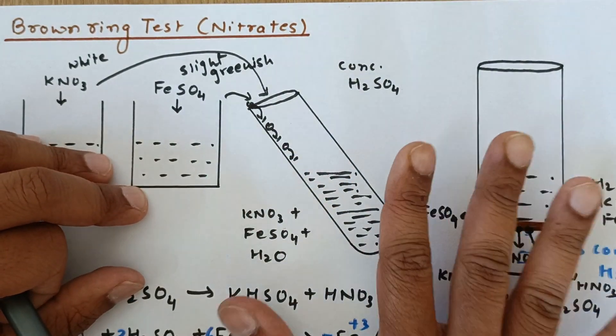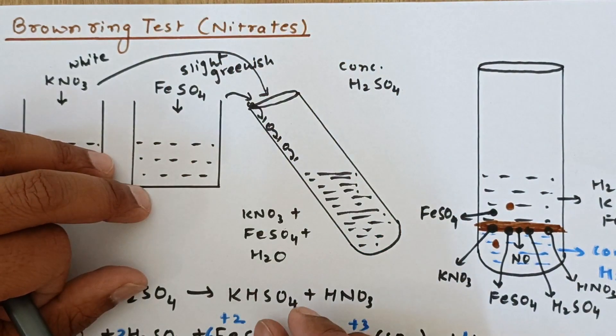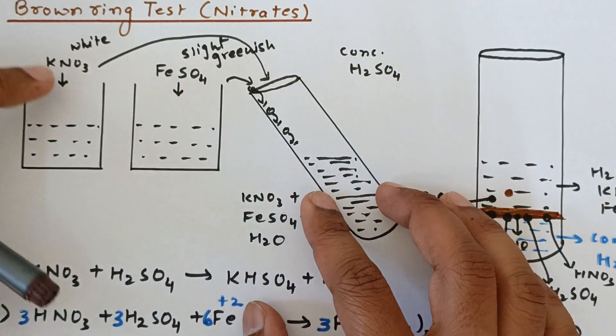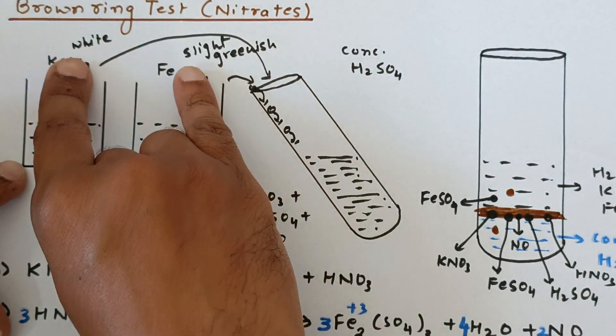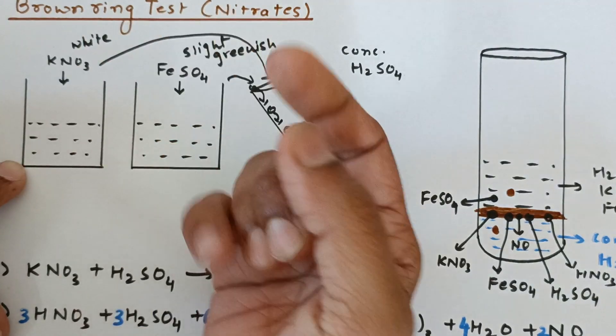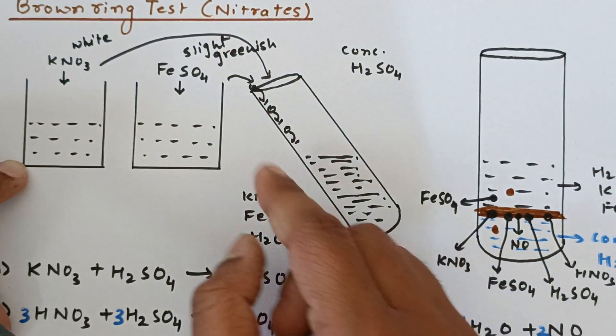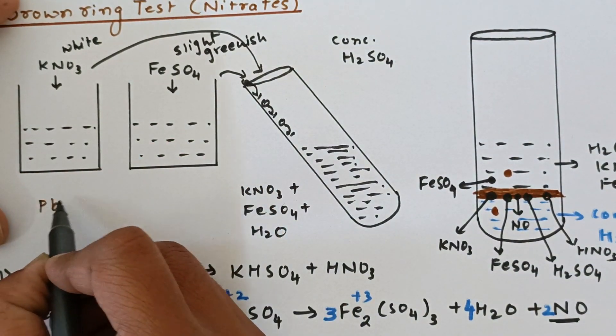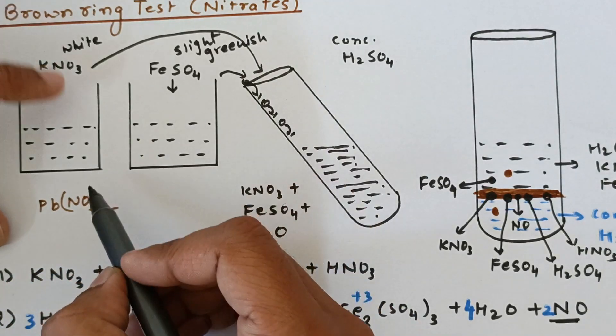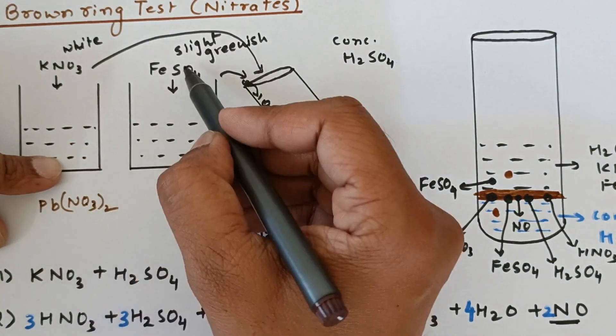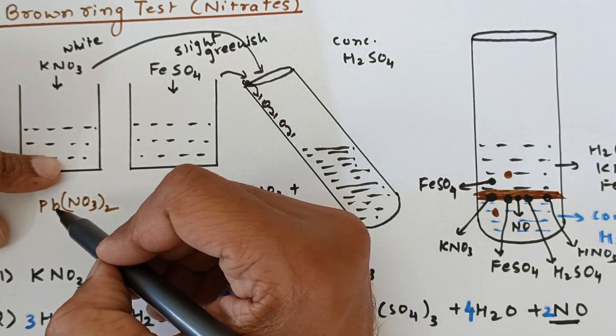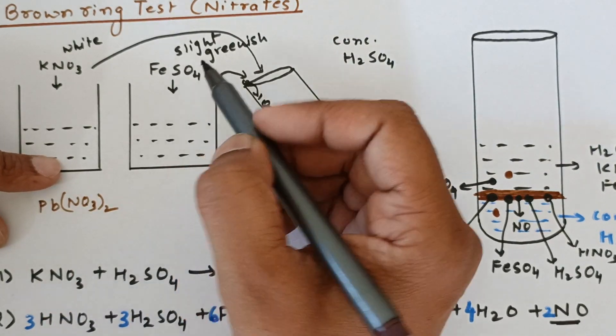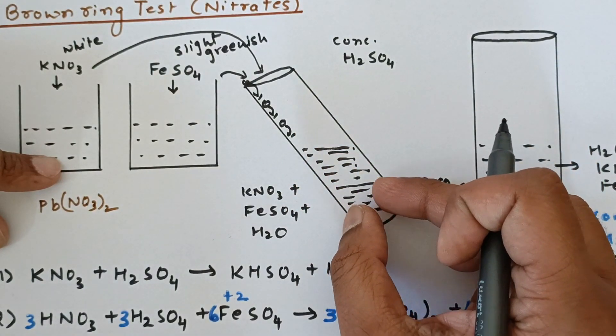Now you should understand that this test does not work for all the nitrates. You could have already seen that this KNO3 is a water-soluble compound. So the reaction between these two gives a product that is water soluble. Now had it been, instead of KNO3 we could have taken, suppose, Pb(NO3)2. Now when this reacts with this, we get a precipitation reaction and the precipitates of PbSO4 are formed and that would settle down in the form of a semi-solid paste. Under that situation, ring formation is not going to happen.